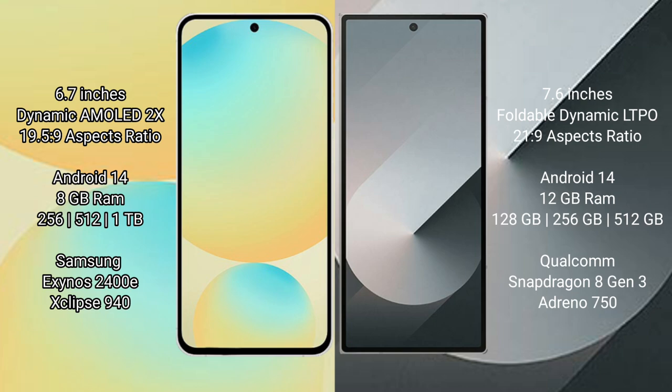The Samsung Galaxy S24 FE comes with 8GB RAM and 128GB, 256GB, or 512GB internal storage, powered by the Samsung Exynos 2400E processor with GPU 940. The Samsung Galaxy Z Fold 6 comes with 12GB RAM and 128GB, 256GB, or 512GB internal storage, powered by the Qualcomm Snapdragon 8 Gen 3 processor with GPU 750.